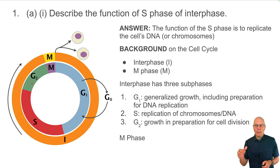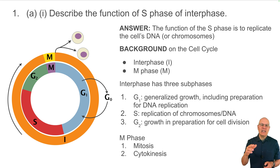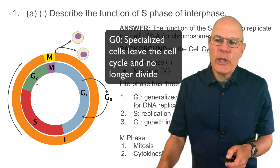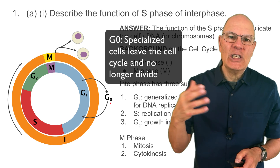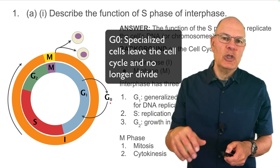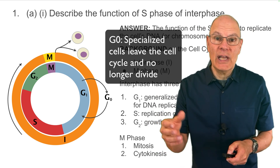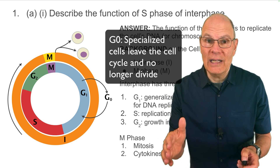M phase can similarly be subdivided into mitosis and cytokinesis. Mitosis is division of the nucleus — prophase, metaphase, anaphase, telophase. Note that there is a G0 phase that many specialized cells, like nerve cells and muscle cells, enter when they leave the cell cycle, specialize, and no longer divide.